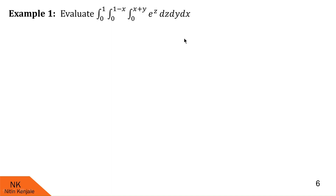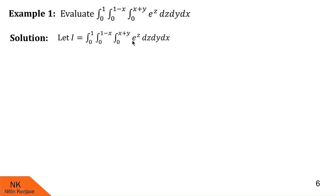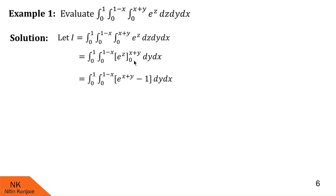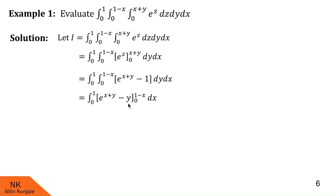Now let us evaluate these integrals one by one from inside outwards. First, we integrate e^z with respect to dz. The integration of e^z with respect to z is e^z itself, evaluated over the limit 0 to x+y. Substituting the upper limit gives e^(x+y), and substituting the lower limit gives e^0 = 1. Now we evaluate this integral with respect to y. e^(x+y) can be written as e^x · e^y, and since e^x is constant with respect to y, the integration gives e^(x+y). The integration of 1 is y. So the integration of e^(x+y) − 1 is e^(x+y) − y.